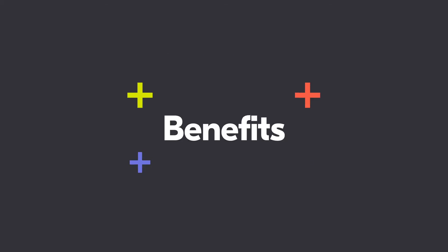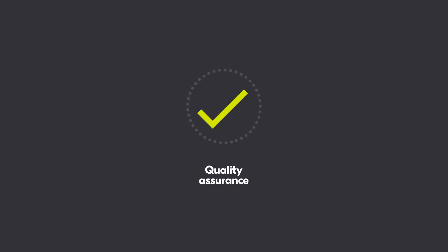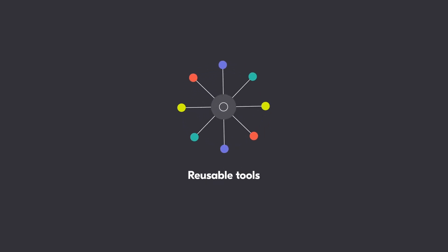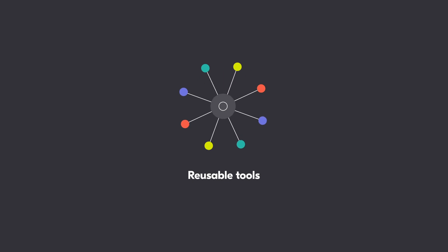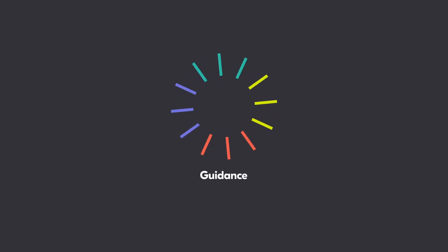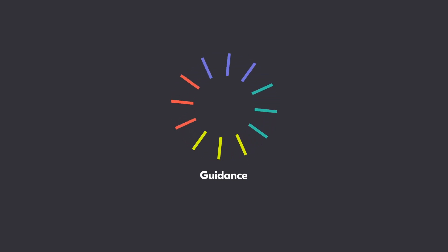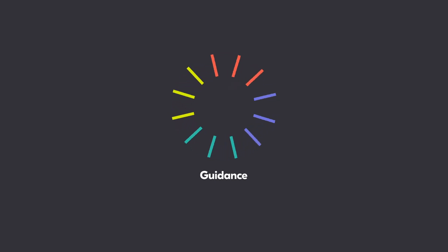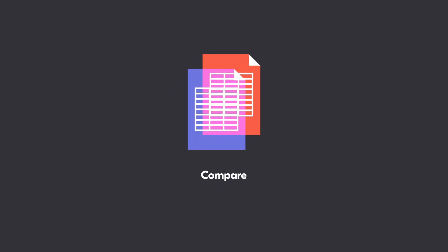Publishing OCDS data has several benefits. You can use quality assurance checks to ensure the data uses the correct structure and contains the required fields. You get access to a growing ecosystem of reusable tools and methodologies for working with OCDS data. You get access to definitions, guidance, templates and documentation describing how to publish and use the data. You can compare your data with other publishers' data to examine value for money and other types of analysis.